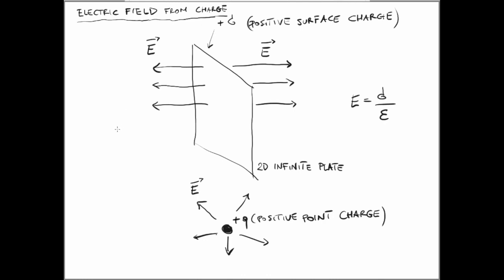Another important concept is the electric field from a charge distribution. For a 2D infinite plate charged with positive surface charge sigma, the electric field is uniform throughout space on both sides of the plate and its intensity is constant. If we have a positive point charge, the electric field has a radial distribution around the charge in all directions.